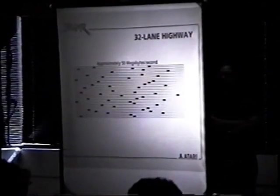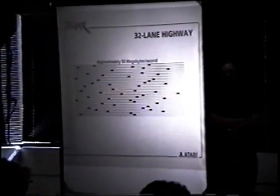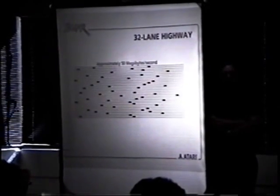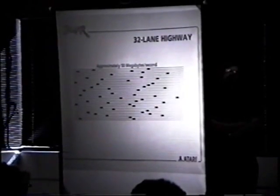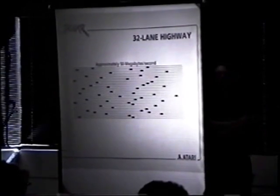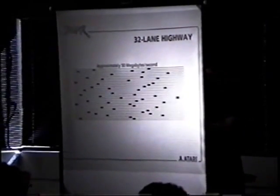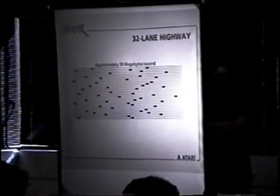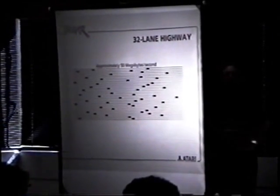Next, we go to some proposed 32-bit systems, and they've got a 32-lane highway, and they get approximately 50 megabytes per second. The great improvement between the 16 and 32 is because of the utilization of current sophisticated RAM technologies.